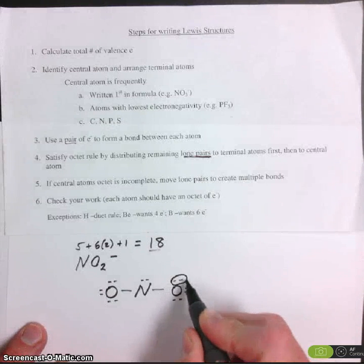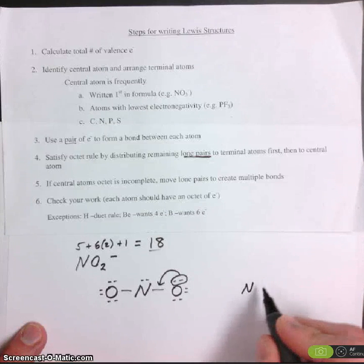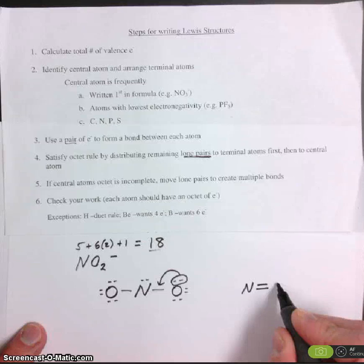So let's take one of these lone pairs and move it down and make a double bond. So now, it should look like this with a double bond.